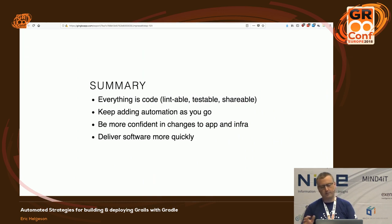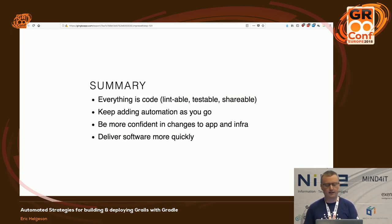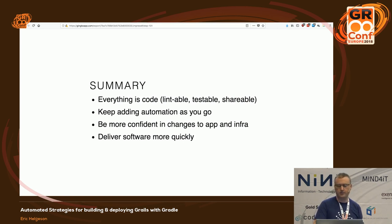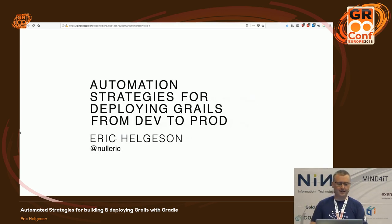Summary: everything is code — literally everything in your pipeline should be code. That's a goal to strive for, but you can't get there on day one, so keep adding as you go. If there's one thing you can take away, go back and try to implement that one thing and then just keep building on that automation. We do this to have confidence in our build and changes so we can get to production quickly and deliver more stable software. Thank you very much.